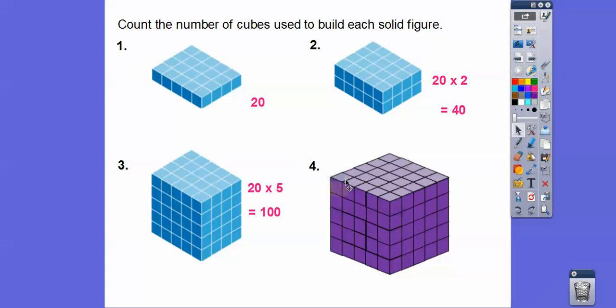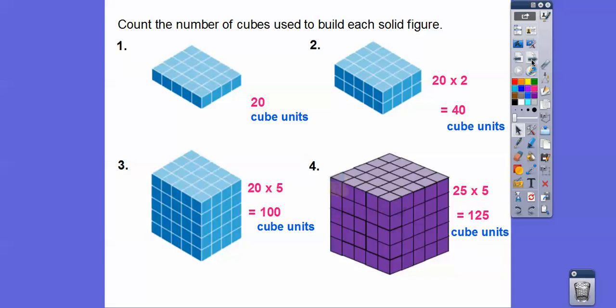Now this figure: the front face is five across and five down — that's twenty-five. There are five rows of twenty-fives, so we multiply twenty-five times five. Think of money: four quarters is a dollar, so twenty-five times four is one hundred. Twenty-five times five is one more twenty-five, giving us one hundred twenty-five. These are always represented in cubic units — you'll see why when we talk about volume in the next lesson, section 11-7.